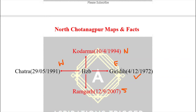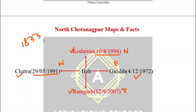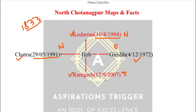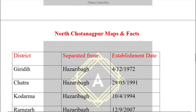After Giridih, moving to Chatra: Chatra was separated from Hazaribagh on 29th May 1991. Then Koderma in the north was separated from Hazaribagh on 10th April 1994. Eventually, Ramgarh was separated from Hazaribagh on 12th September 2007. So to recap: Hazaribagh district was formed in 1833; in 1972, Giridih was separated; in 1991, Chatra was separated; on 10th April 1994, Koderma was separated; and on 12th September 2007, Ramgarh was separated. These are very important questions for forthcoming examinations.